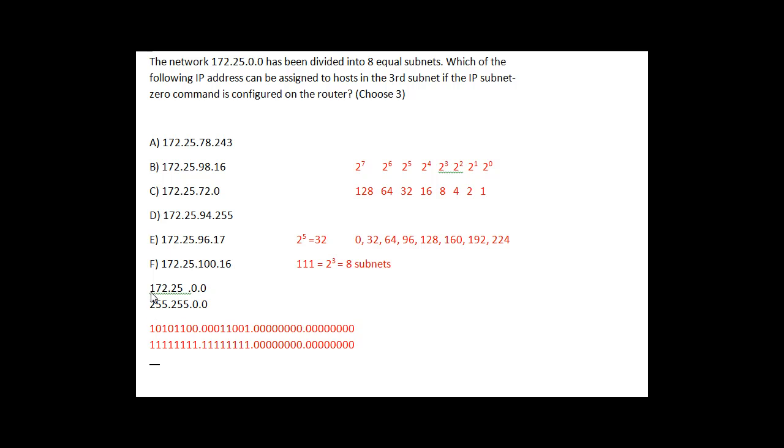Okay, so if we've got 172.25 as our starting point, then the subnet mask starting point is 255.255.0.0. So what we're going to do is we're going to borrow bits from this third octet right here to make eight subnets.